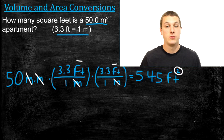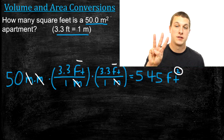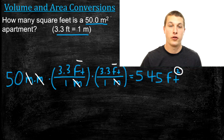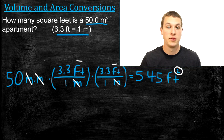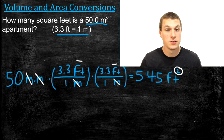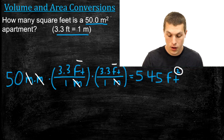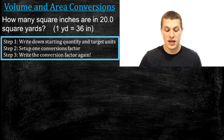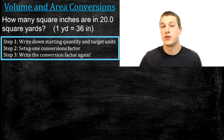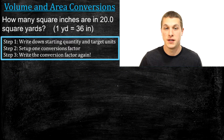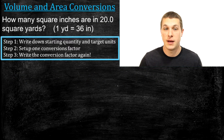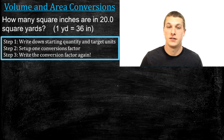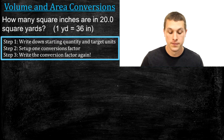That's how we go through area conversions. Volume conversions are very similar — we just use three conversion factors, because now we have meters times meters times meters, or meters cubed. We're going to do one more area example where I've written down the steps explicitly, so it's nice to have these steps but also understand why we use them.